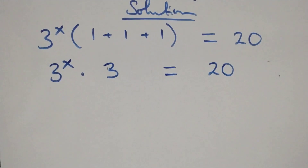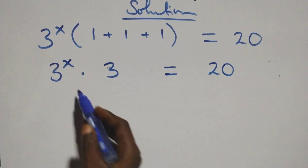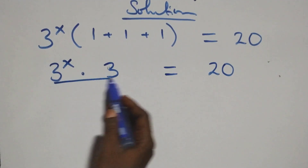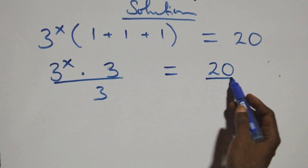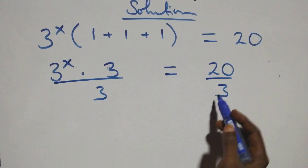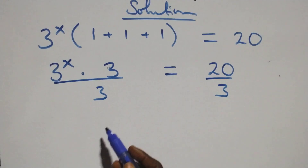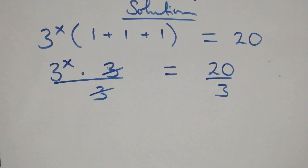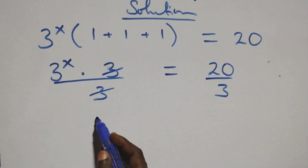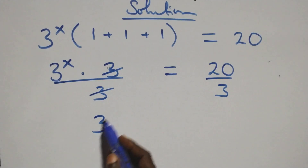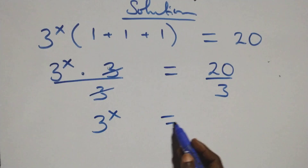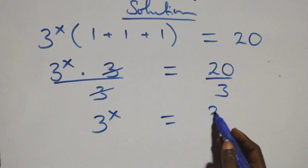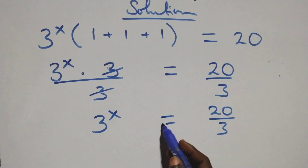Then the next step: we divide both sides by 3. We divide this side by 3, and also divide this side by 3, which means the 3s cancel each other. And we have 3 raised to power x equals 20 over 3.